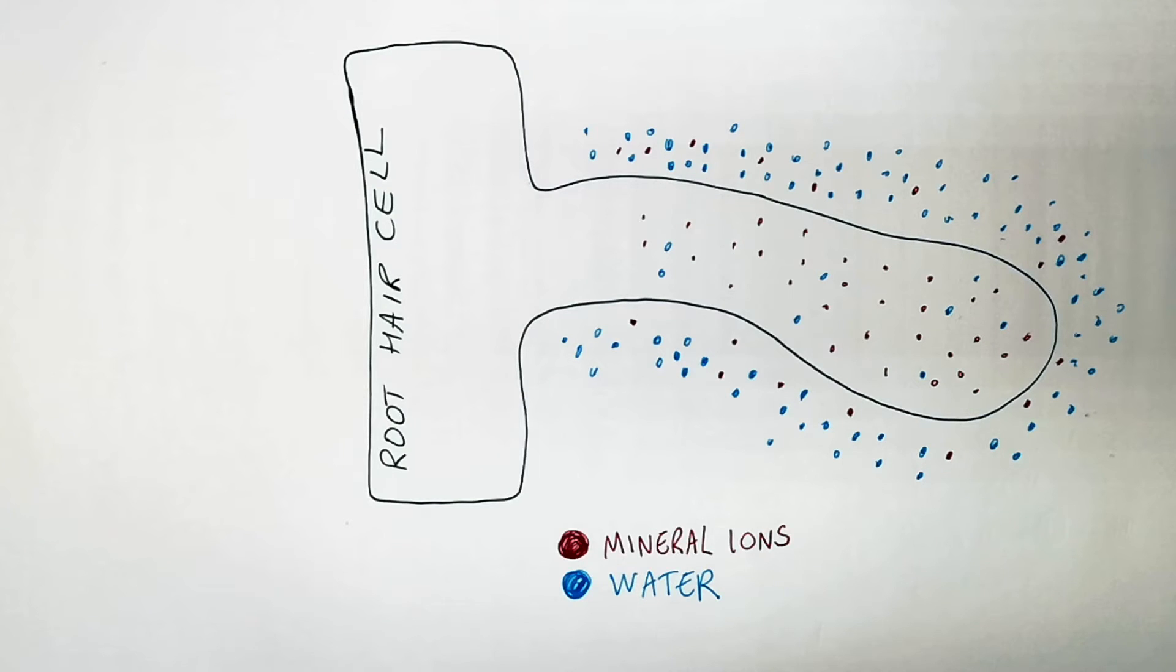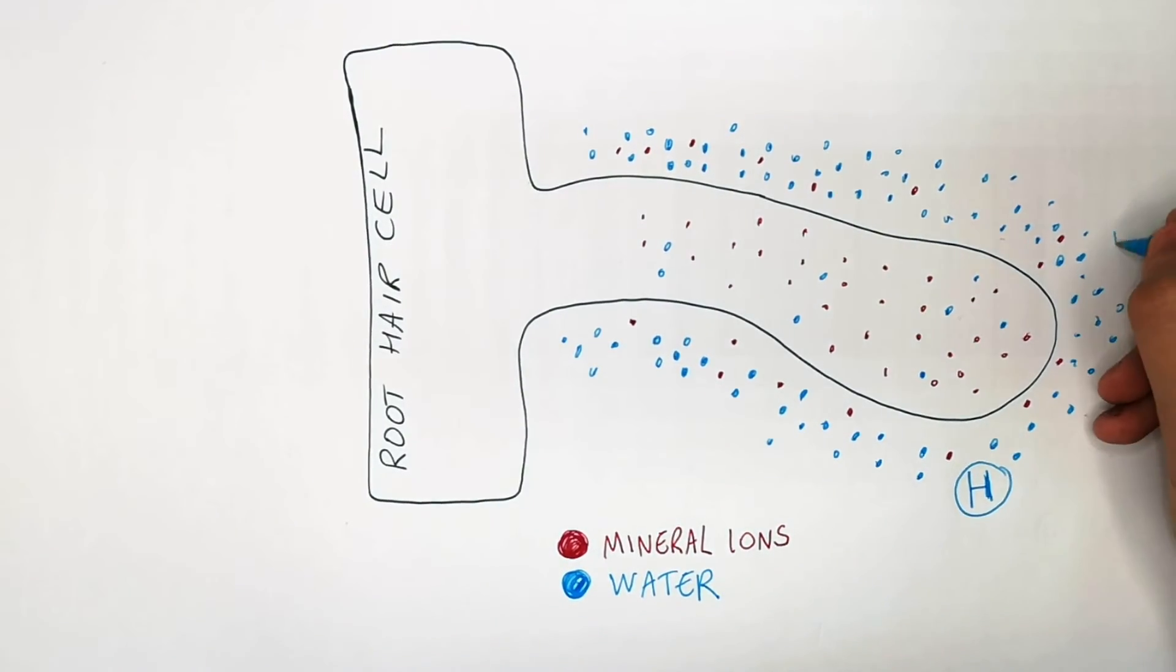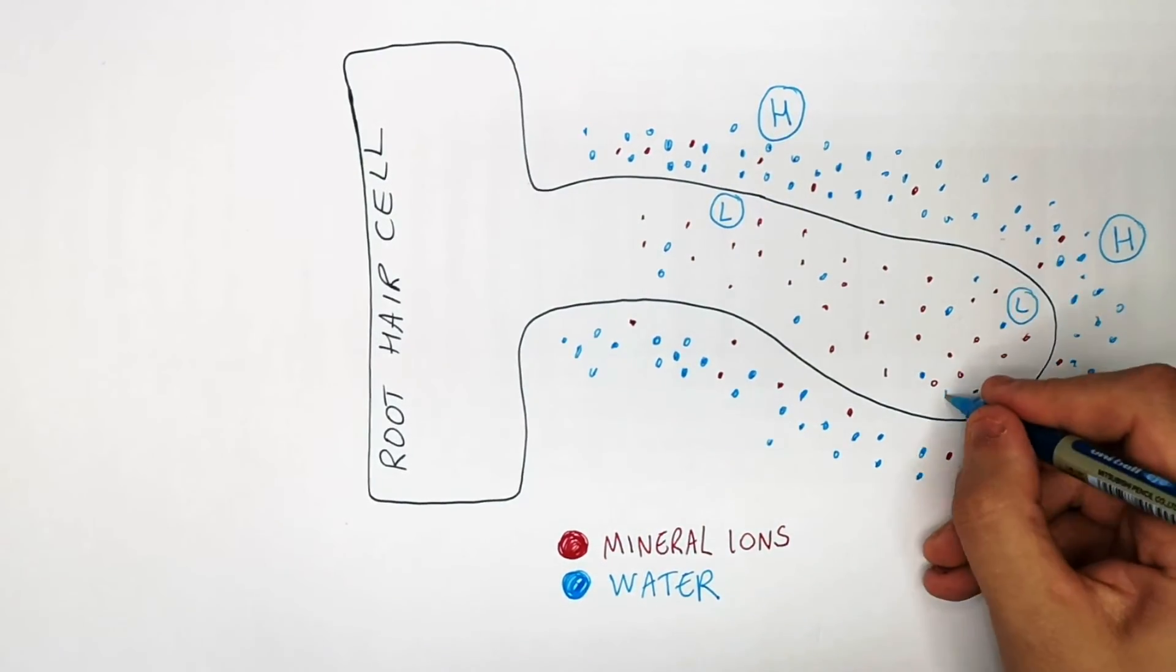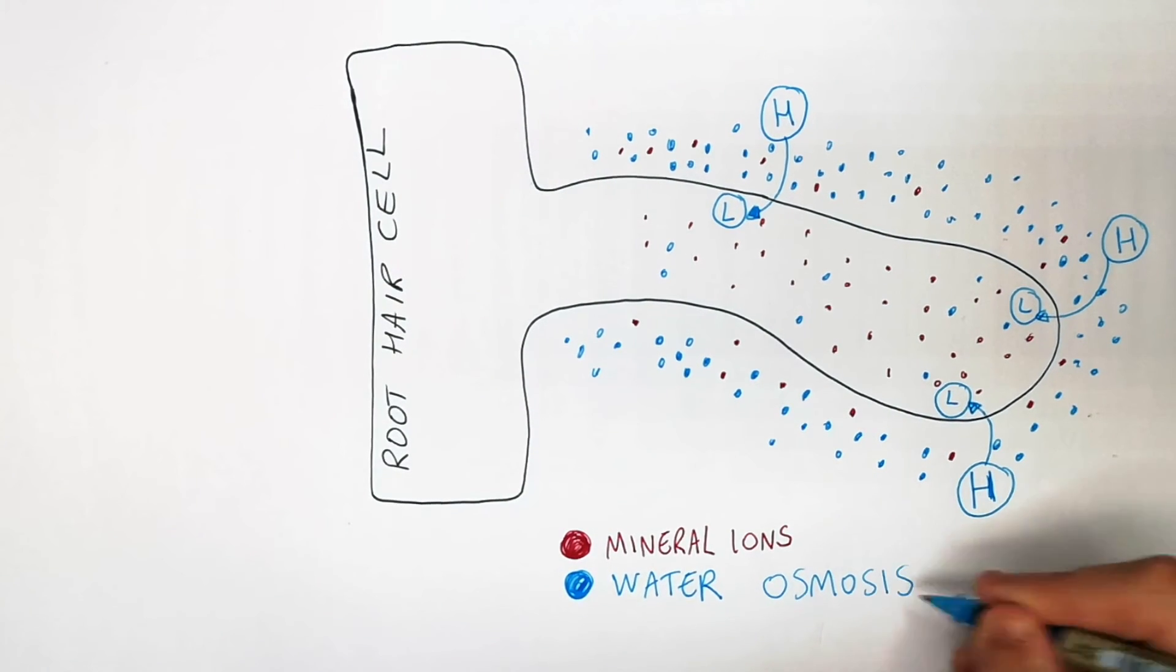So in a root hair cell, there are mineral ions that need to be absorbed from the soil as well as water that needs to be absorbed. Mineral ions are absorbed by active transport, whereas water is absorbed by osmosis. So with water, you must always identify where the high concentration is, as shown here, and where the low concentration is. So water is going to osmose from a high to low concentration by osmosis into the root through a partially permeable membrane.